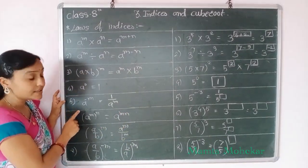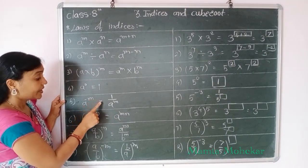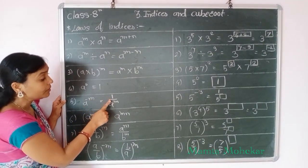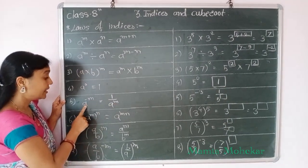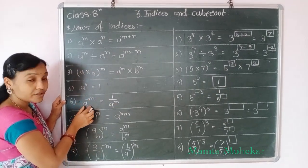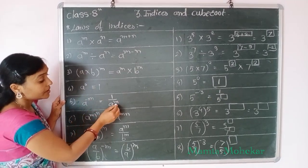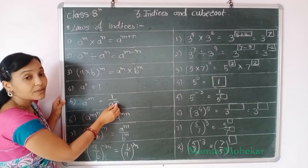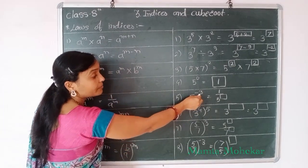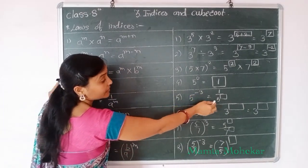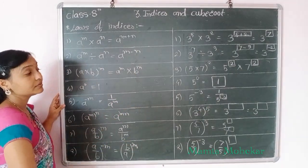Next rule is: A raised to power minus M equal to 1 upon A raised to power M. Here they give us a rational number whose power is negative. When we do the reciprocal, the power becomes positive. Example: 5 raised to power minus 3 — its reciprocal is positive, so we write down 1 upon 5 raised to power 3.